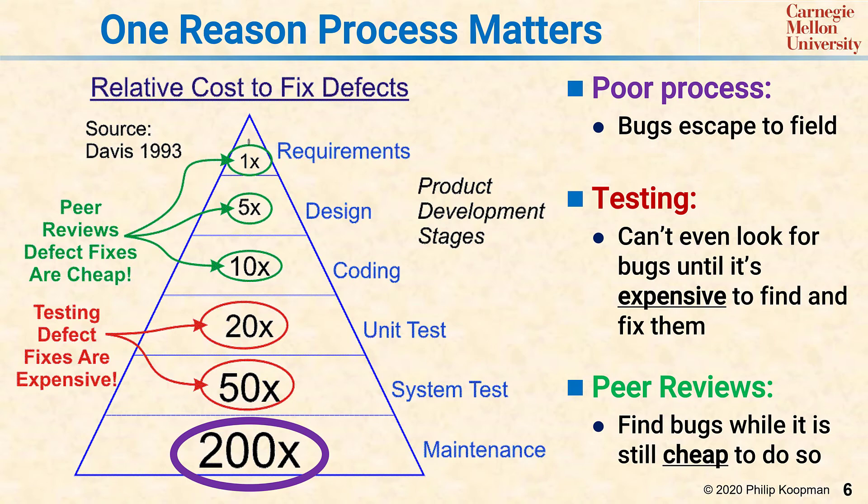But those peer reviews only work if you're actually creating the artifacts to review. If you don't have a design, you can't peer review the design and find bugs at 5x instead of 200x. If your code's a mess because you're not doing static analysis and not following a style guide, then peer reviews are going to be much less effective at fixing bugs. The idea is that you have to not only define this nice V process, but you actually have to follow it to find bugs early when they're cheap instead of late when they're expensive. And SQA is how you know whether or not things are working.